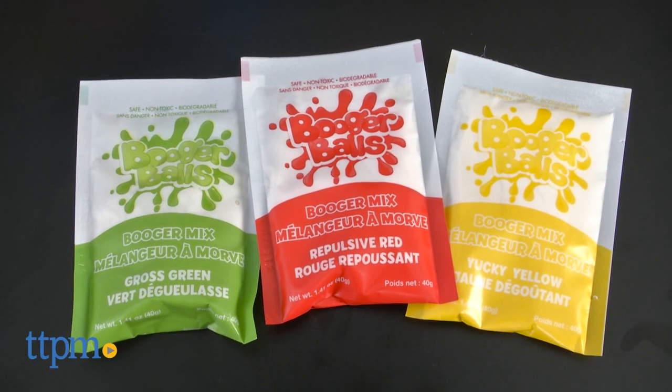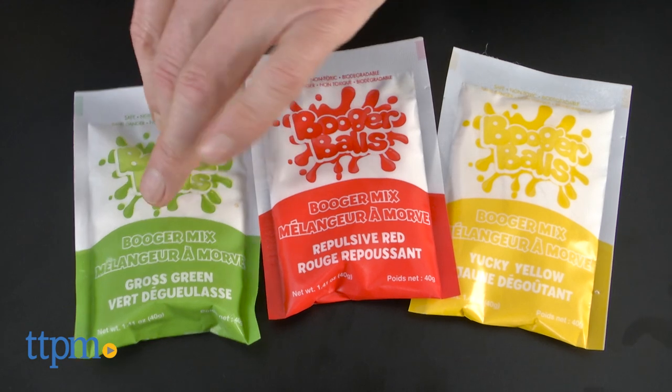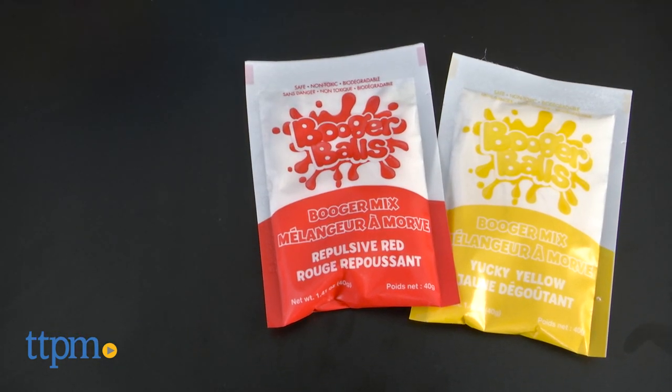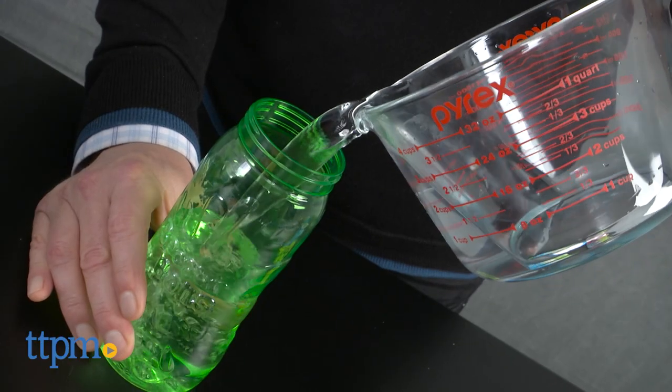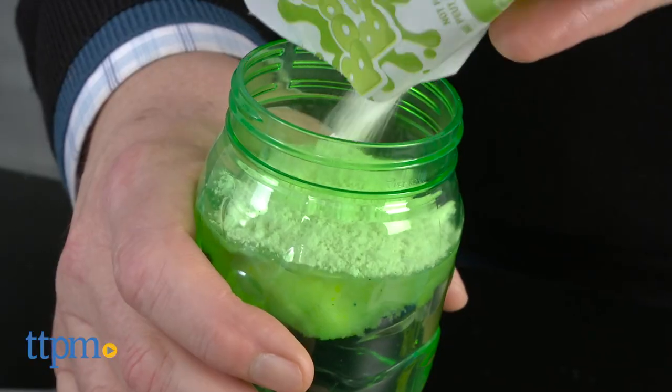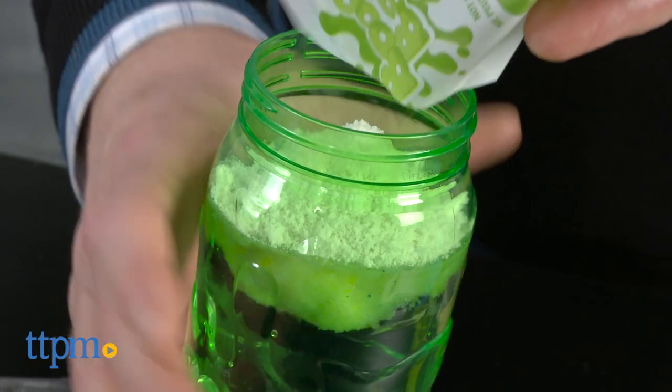Now we're going to make the boogers. The set comes with green, yellow, and red, but I think we'll go with green today. Pour 17 ounces of water into the shaker maker and add the booger powder and put the cap up. Shake it up.